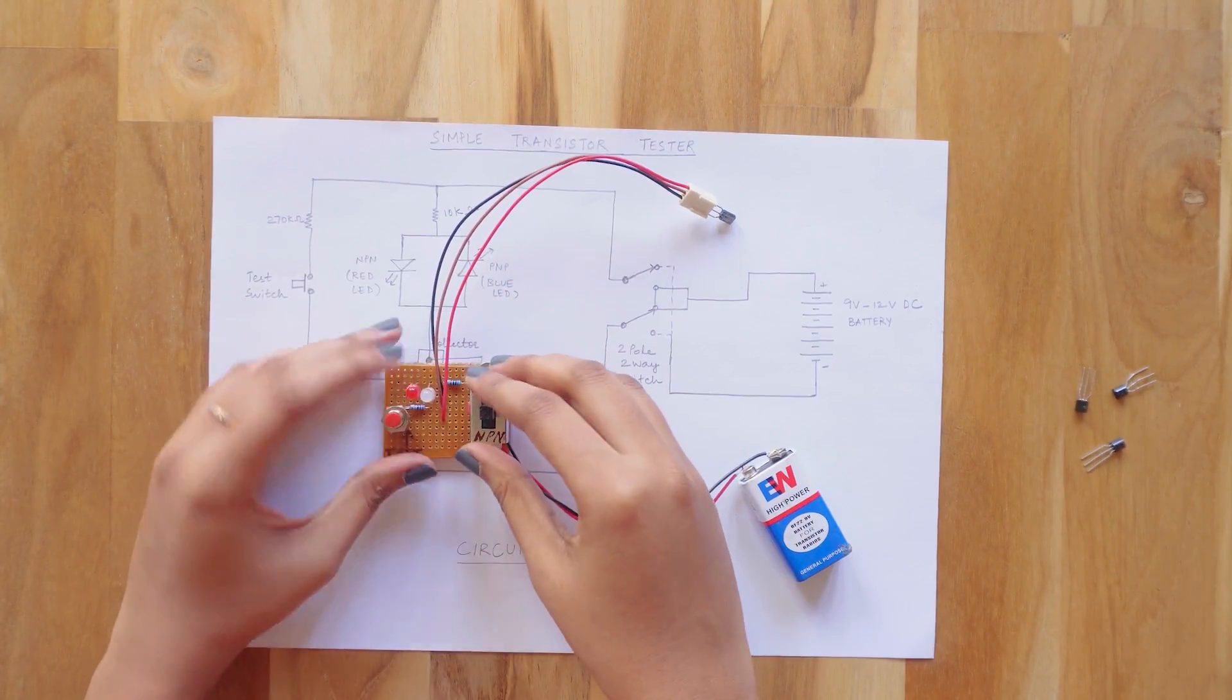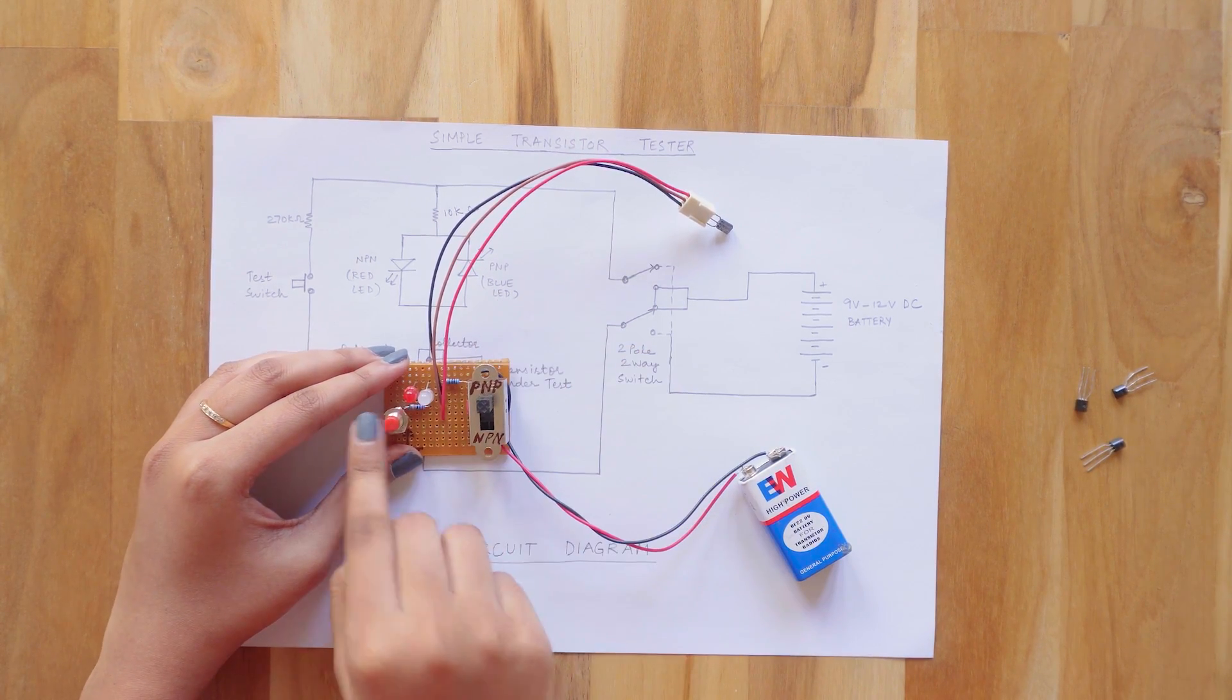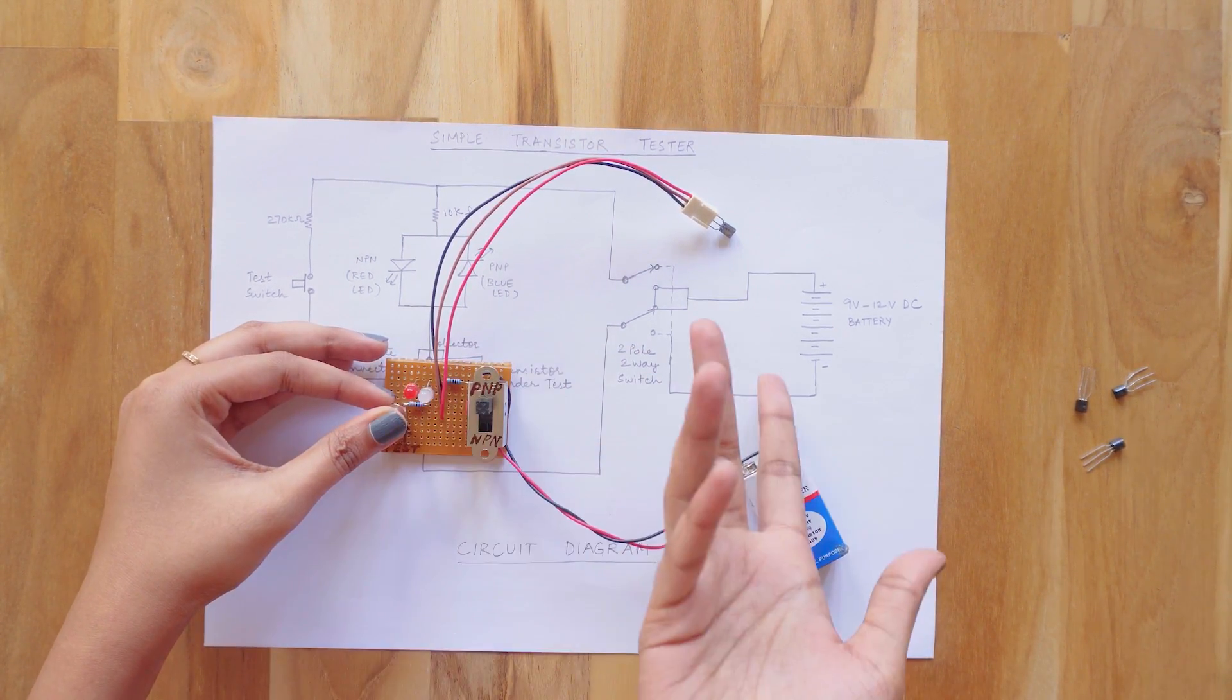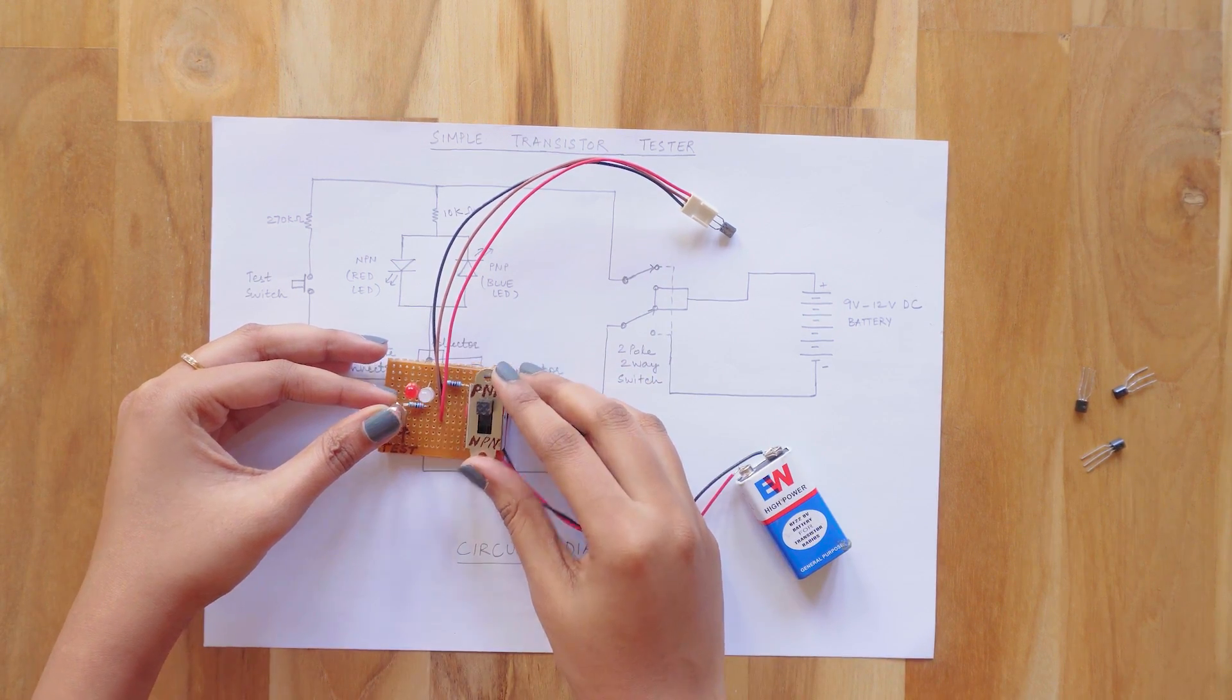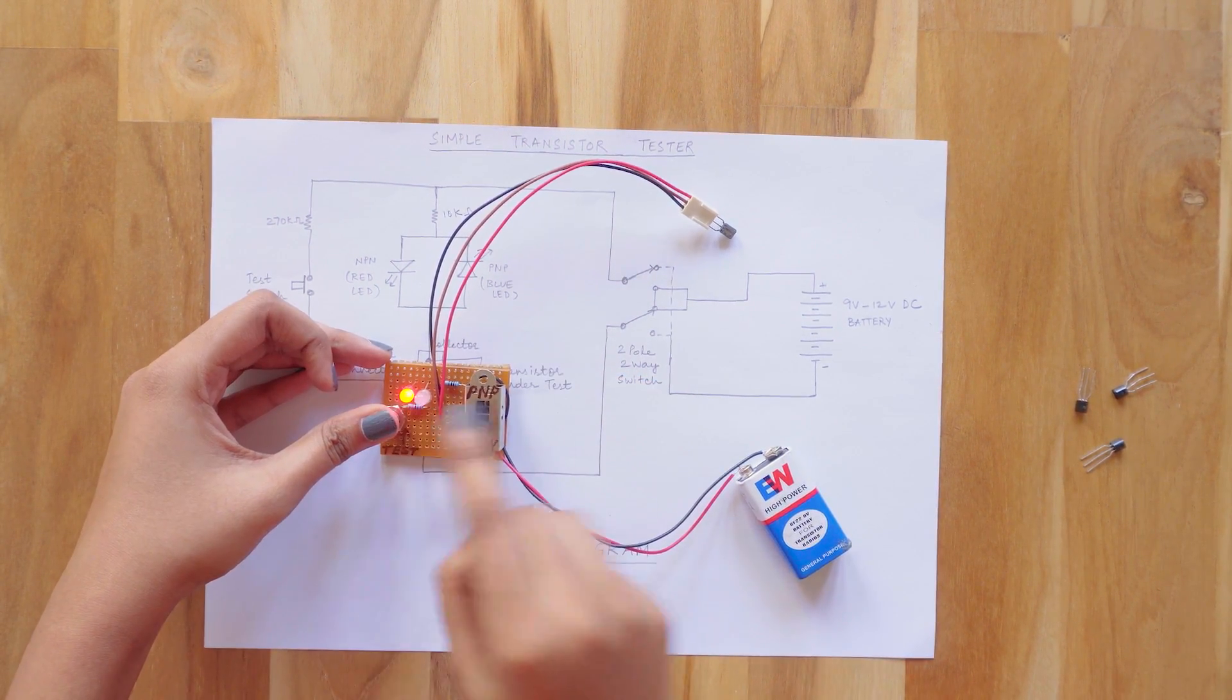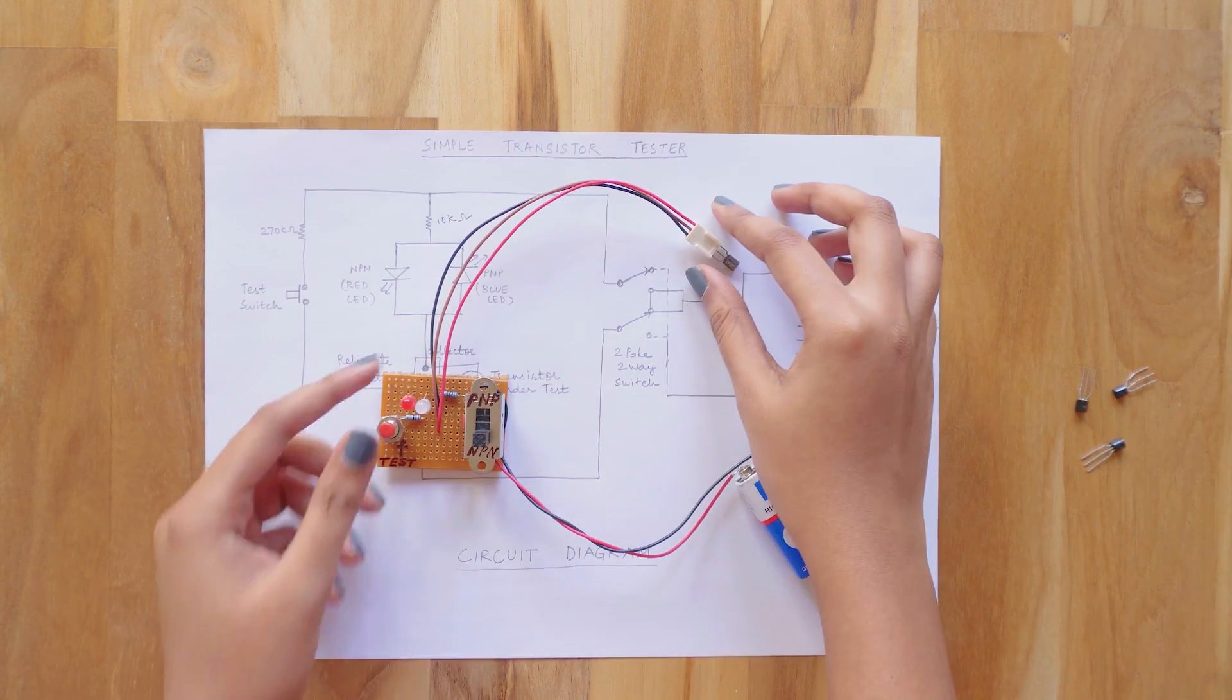Let me change the switch to PNP first and push the test switch. You see guys, the LED is not glowing. Now let's change it to NPN and test it. Yeah, the red LED is glowing which means that this is an NPN transistor.